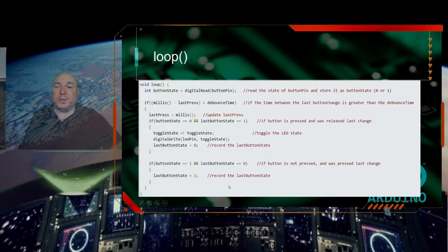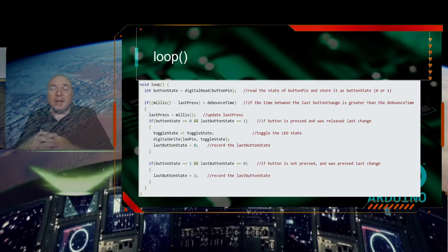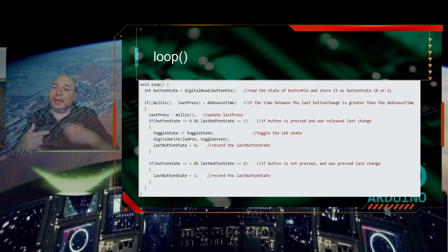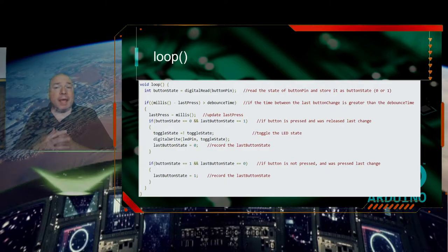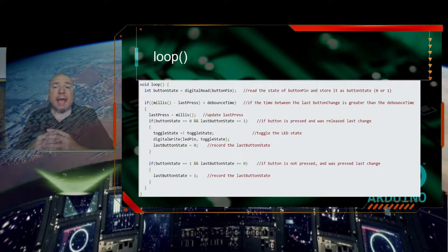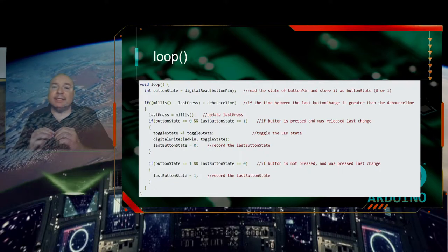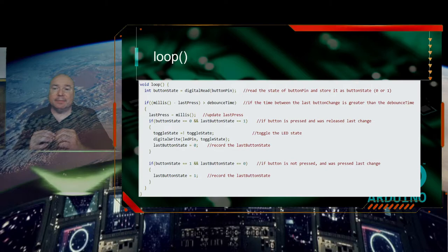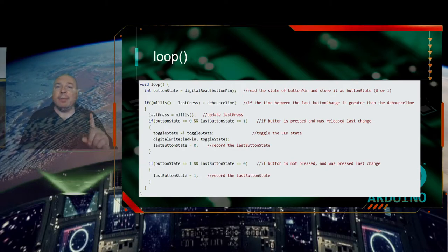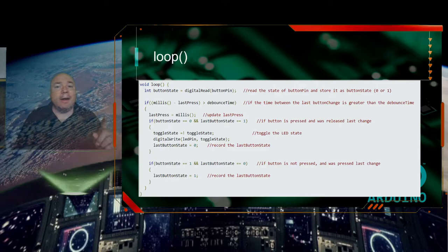Now into our code — there's a lot going on here. This is a loop, so it's going to repeat over and over again. The first line of code reads the button state, which determines whether our button is pressed or not pressed.